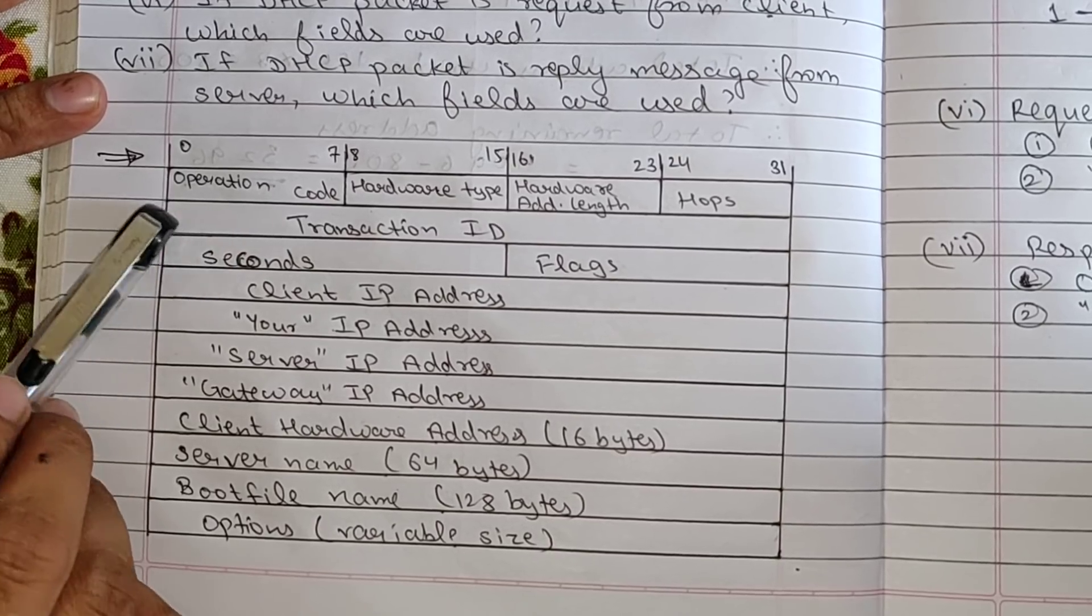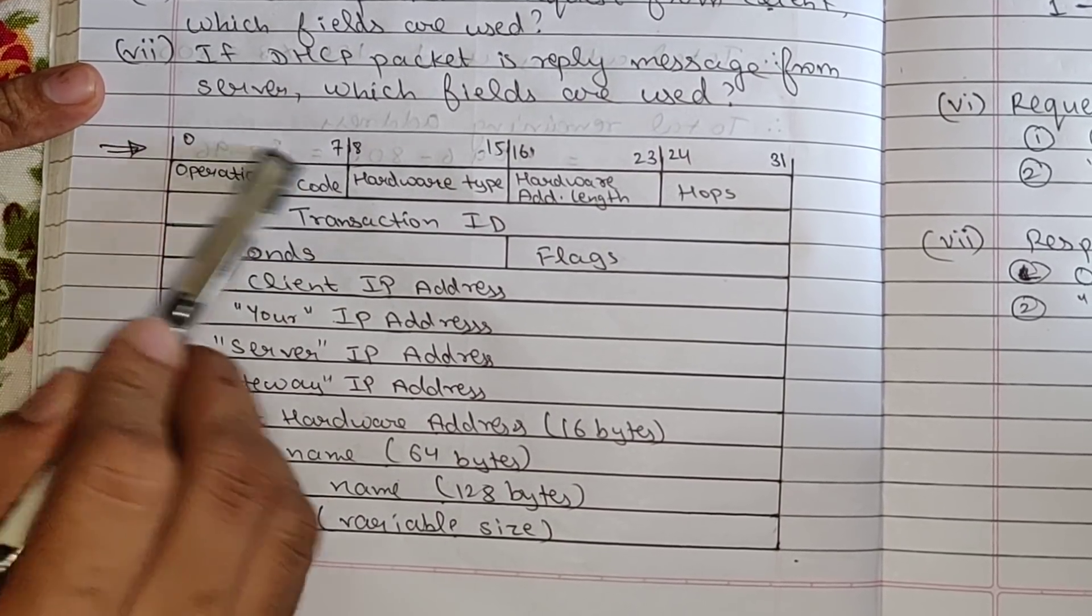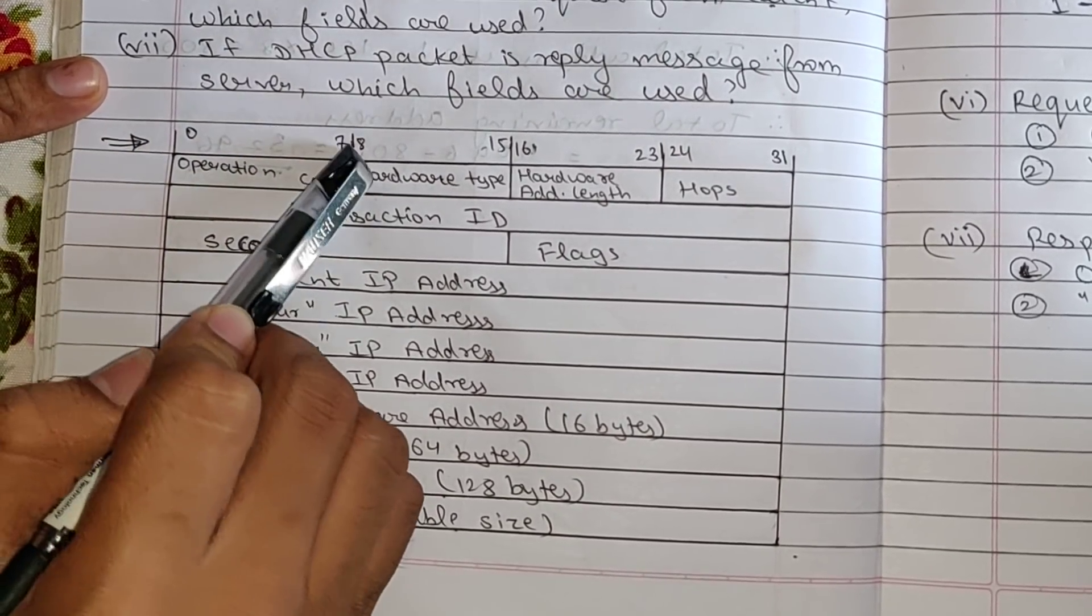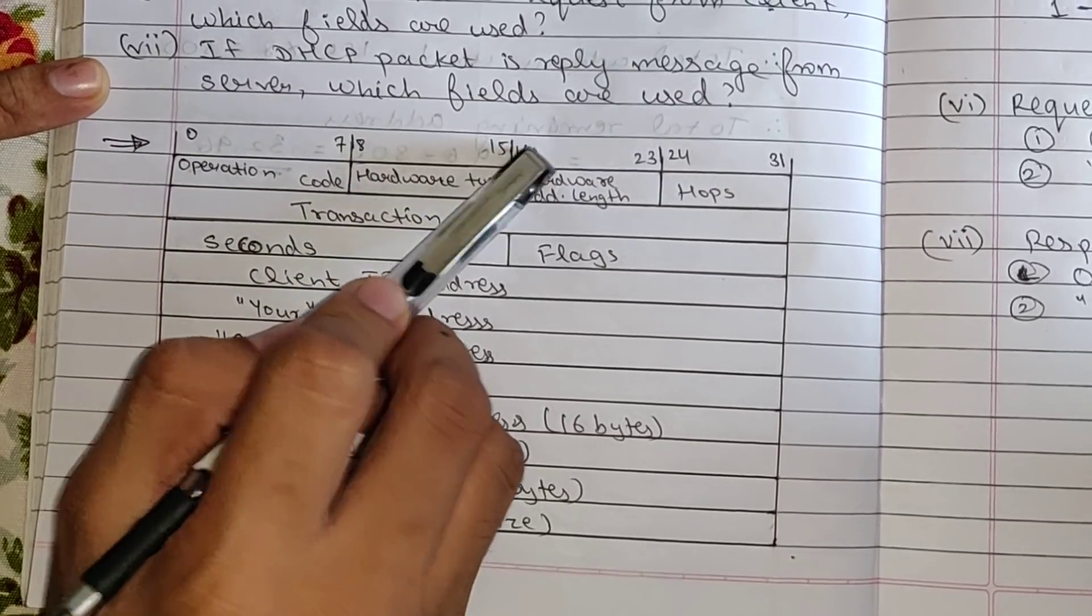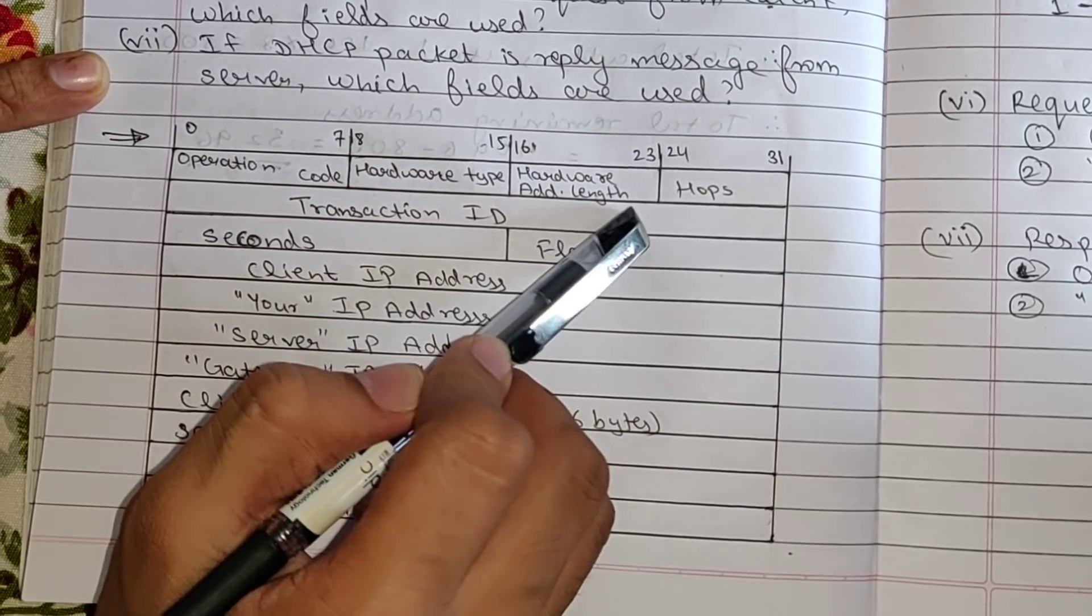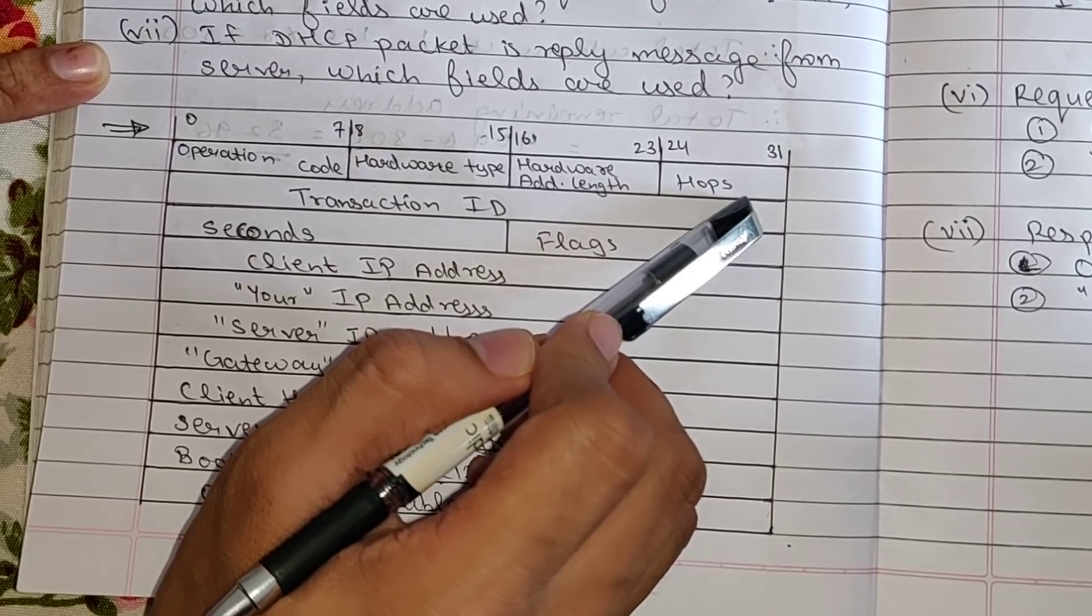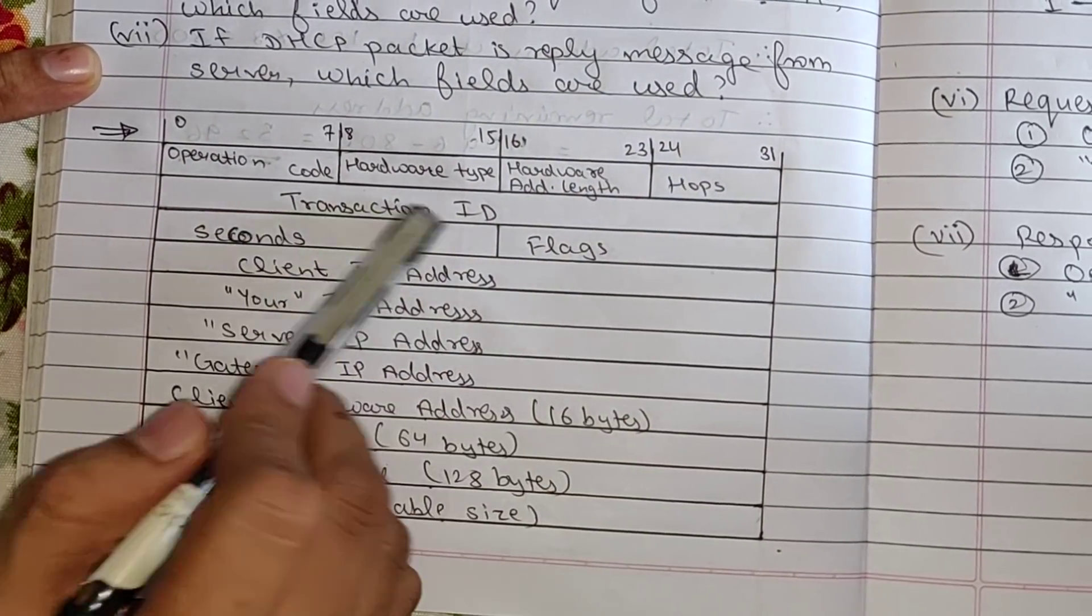So what we have here is it's of 32 bits. Next we have operation code from 0 to 7 bits, then from 8 to 15 it's hardware type, 16 to 23 it's hardware address length, 24 to 31 it's hops.